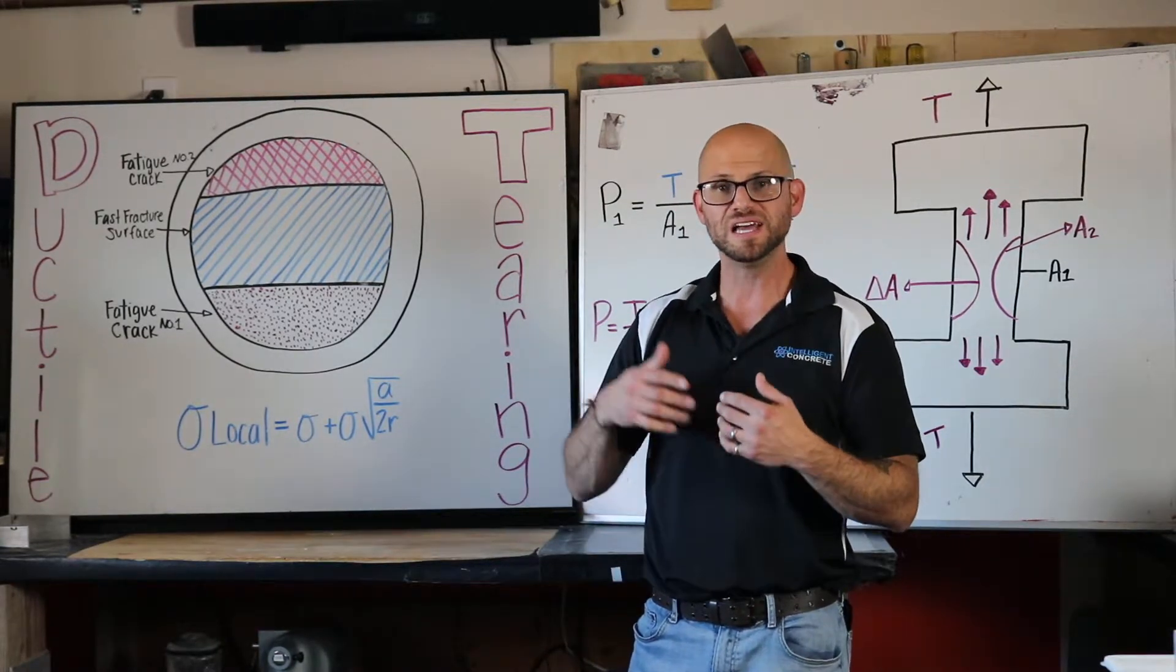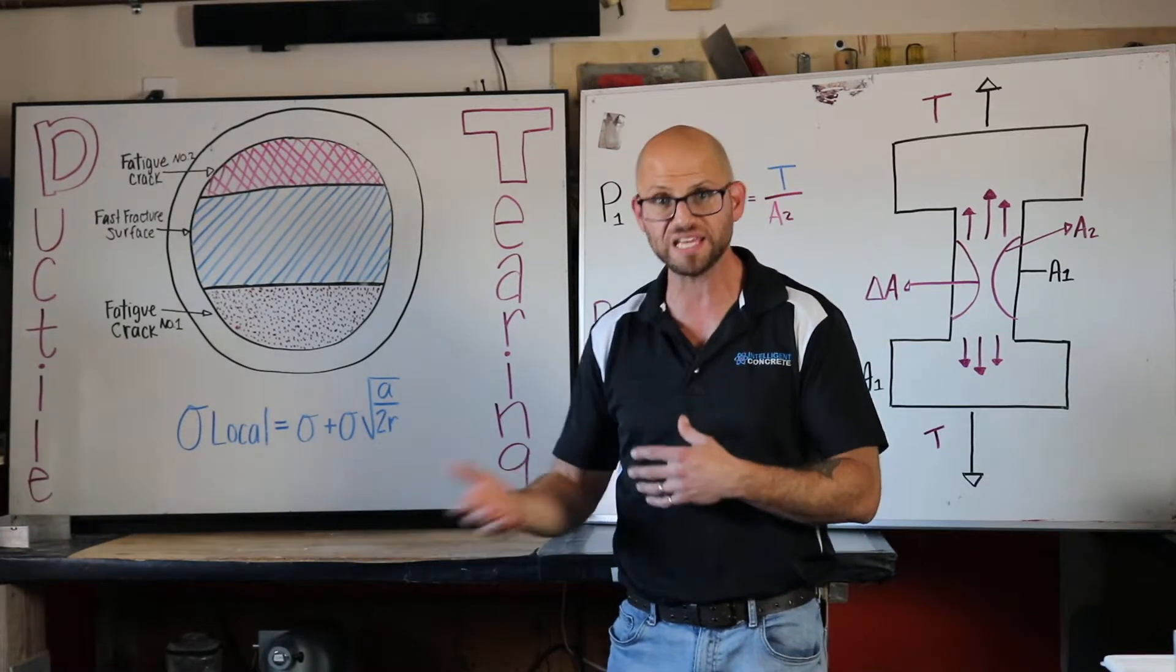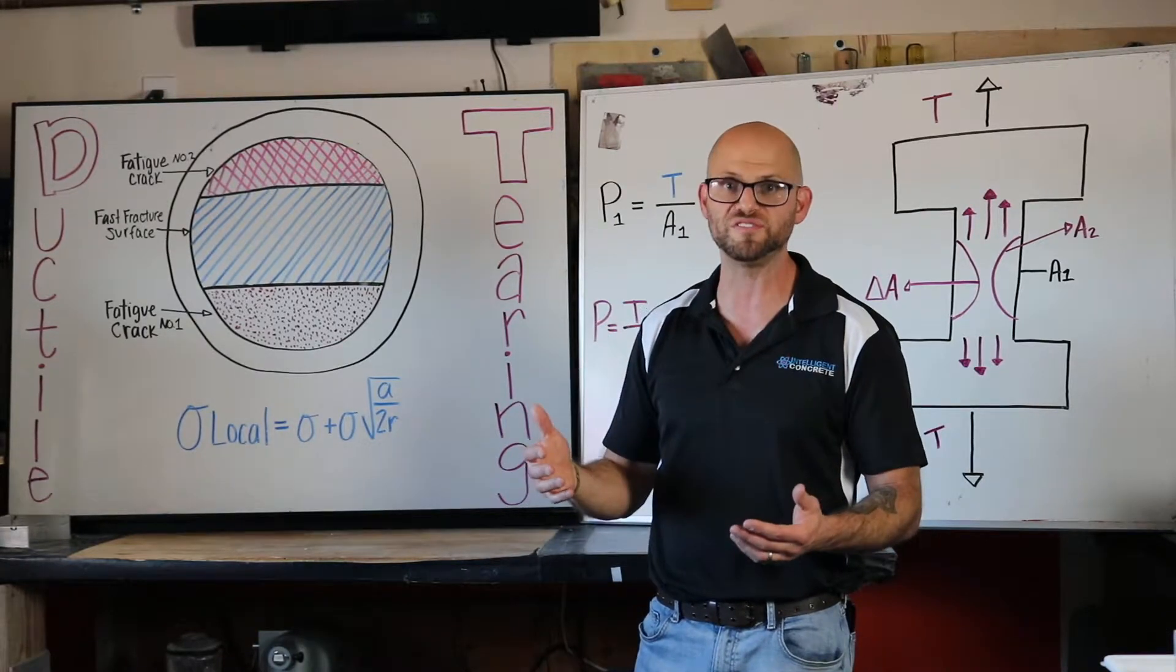That's why we use steel in concrete reinforcement—to actually give us some running room so that we can see the structure failing and get off of it before we have a final ultimate failure.